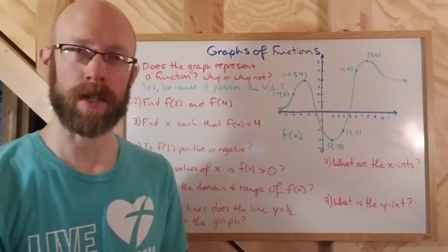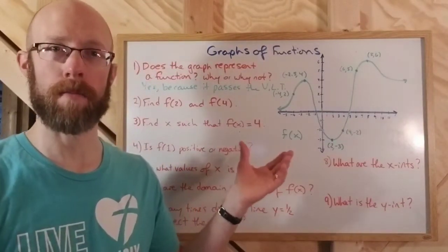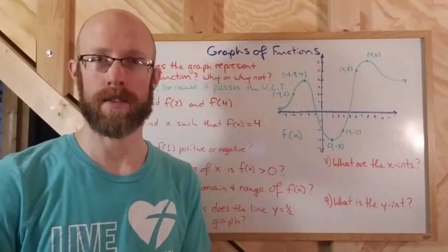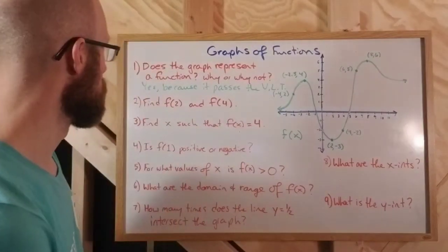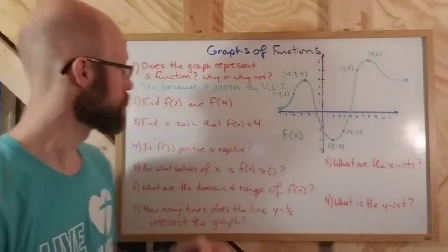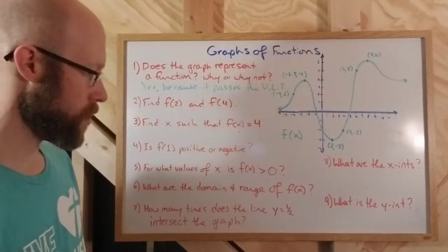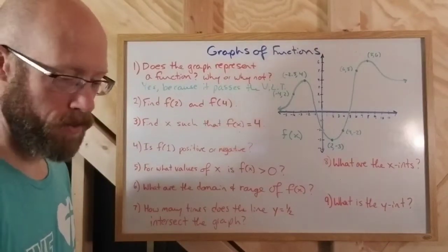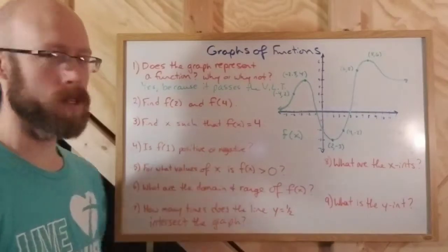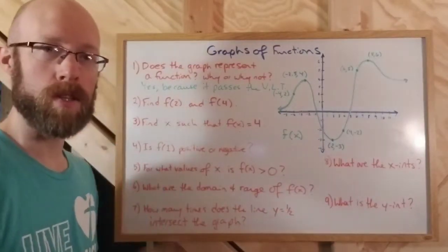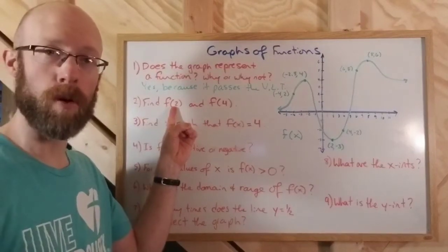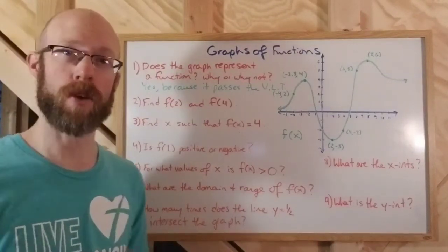Now that we've established it is a function, let's look at some function values, like f of 2 and f of 4. When you see the notation f of 2, the 2 is the input because it's in the parentheses — that's your x value. You want to go along the x-axis until you see a 2, because 2 is on the x-axis. Then you go to the output; f of 2 is the output and 2 is the input.